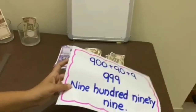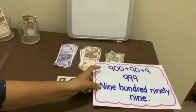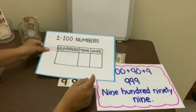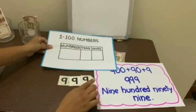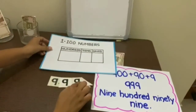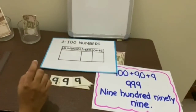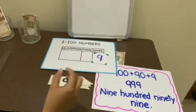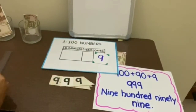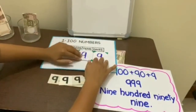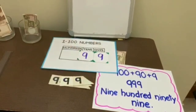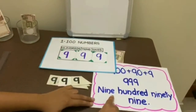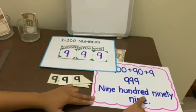Now if we see this value on the place value chart: at the 1's place there is 9, at the 10's place there is 9, and at the 100's place there is 9, which means 999.